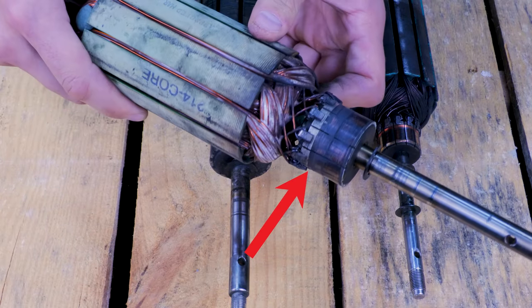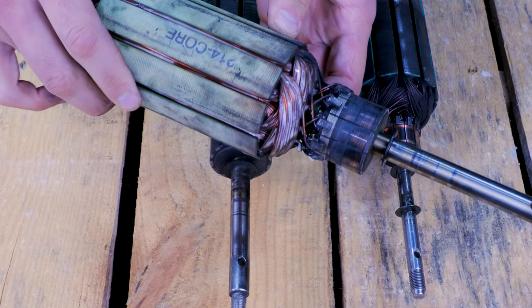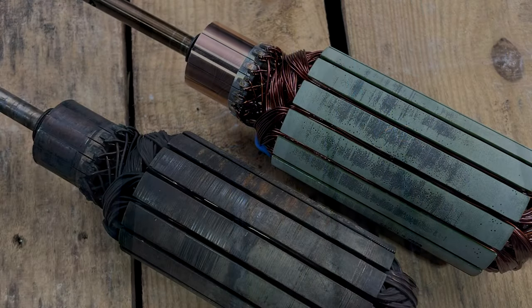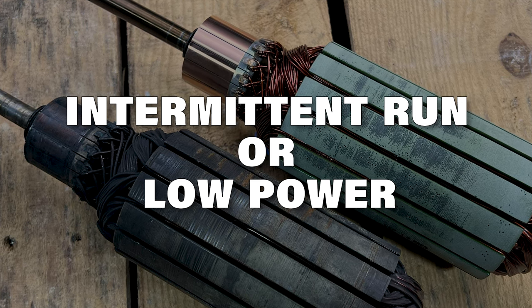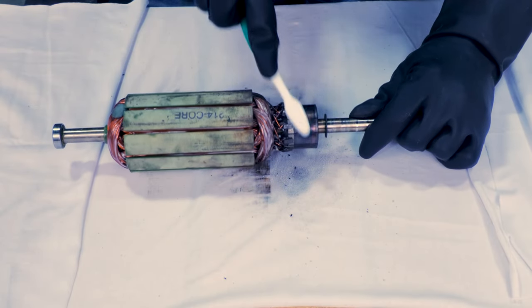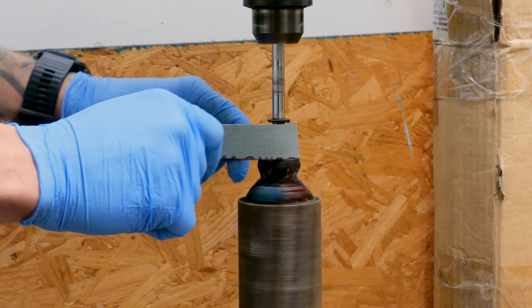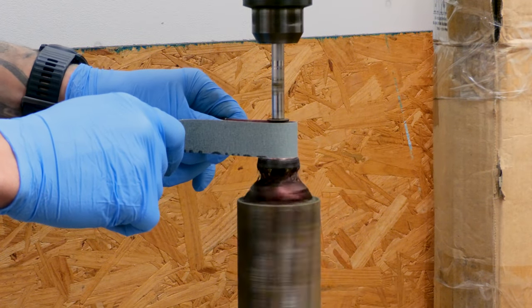Over time, your commutator can get a buildup on it that will cause a bad connection between the brushes. This can cause your motor to run intermittently or have low power. In this video, we're going to be showing you how to clean the commutator on your trolling motor armature so that you can get your motor running like new.